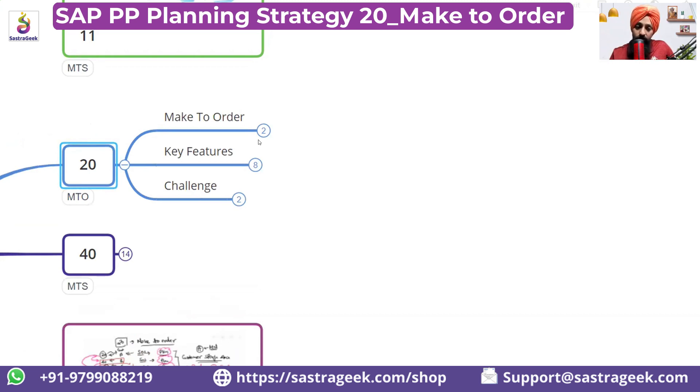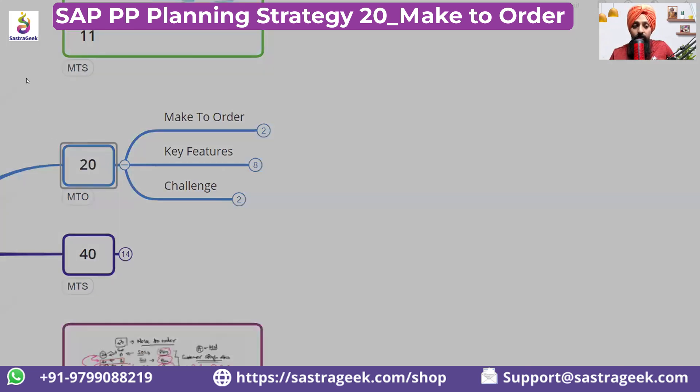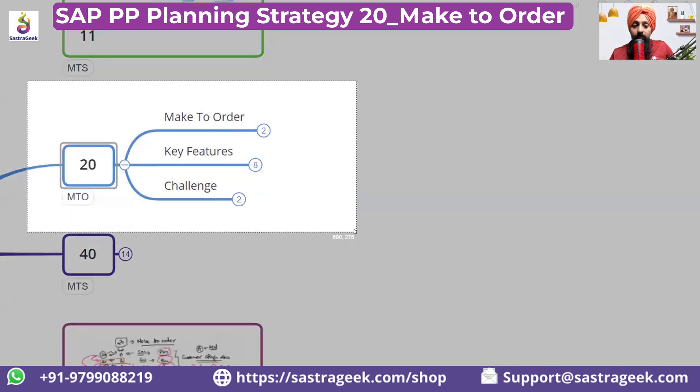It will also generate sales order stock, so the stock would be sales order stock. So strategy 10 is classic make-to-stock and strategy 20 is classic make-to-order.